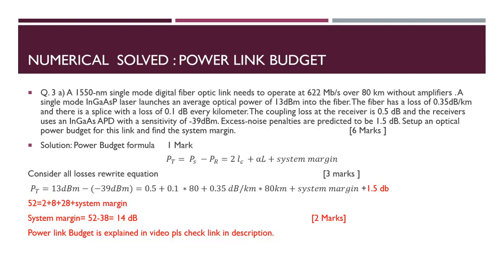The splice loss is 0.1 dB every kilometer, so that's 0.1 dB × 80 km = 8 dB. At the receiver side there is a 0.5 dB coupling loss, so 0.5 dB is also added. The excess noise penalties predicted is 1.5 dB. We add all these losses into the formula.